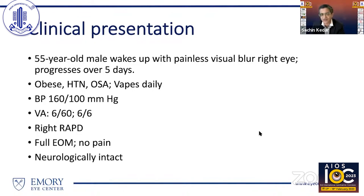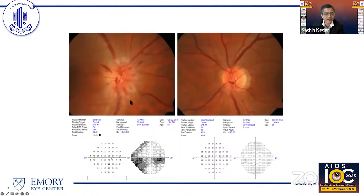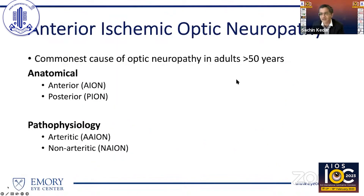He's obese with vascular risk factors. You examine him and he has reduced visual functions in the right eye, a right RAPD, and you correctly localize it to the right optic nerve. The nerve is swollen and he has a visual field defect in that eye. The fellow eye is small, crowded, with a very small cup. You have correctly identified anterior ischemic optic neuropathy, the commonest cause of optic neuropathy in adults above the age of 50 years.